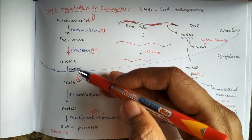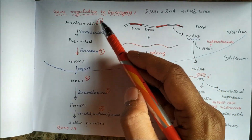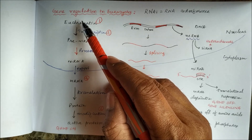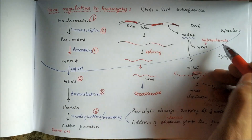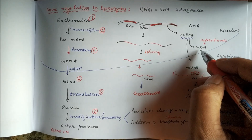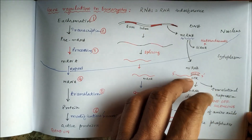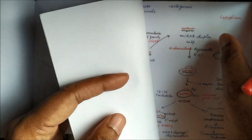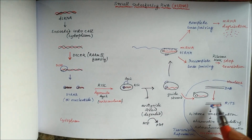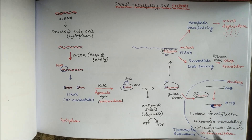In eukaryotes, gene regulation can occur at six stages. The first stage involves condensing the euchromatin form of DNA into heterochromatin. For example, there is one non-coding RNA called small interfering RNA (siRNA) which can bind to euchromatin and help further condense the DNA into heterochromatin, so that there will be no transcription.